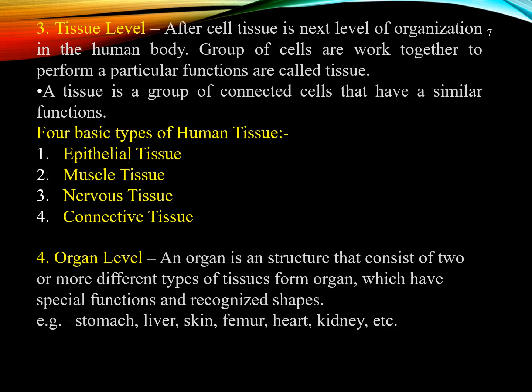The third level is the tissue level. After the cell, tissue is the next level of organization in the human body. A group of cells working together to perform a particular function forms a tissue. A tissue is a group of connected cells that have a similar function. The four basic types of human tissues are epithelial tissue, muscle tissue, nervous tissue, and connective tissue. The fourth level is the organ level. An organ is a structure that consists of two or more different types of tissue. Groups of tissues form an organ with special functions and a recognized shape. Examples include the stomach, liver, skin, heart, lungs, and kidneys.